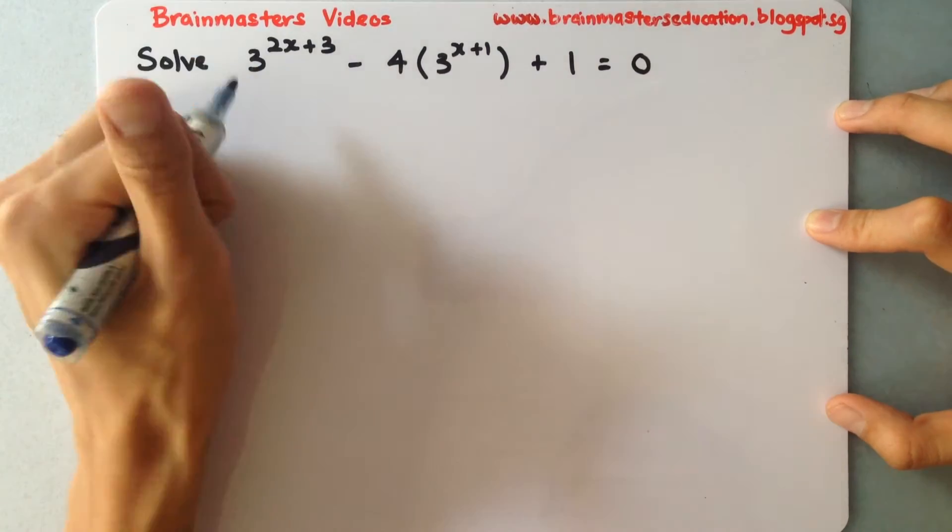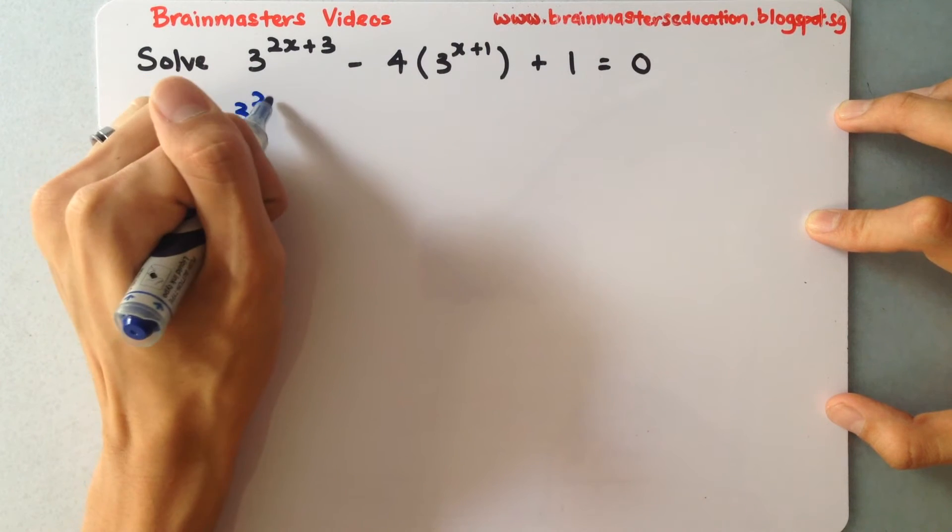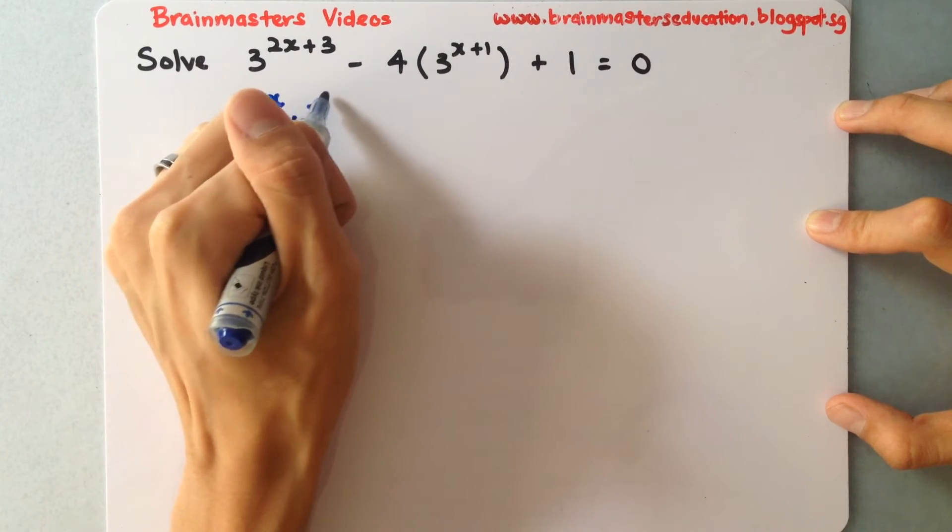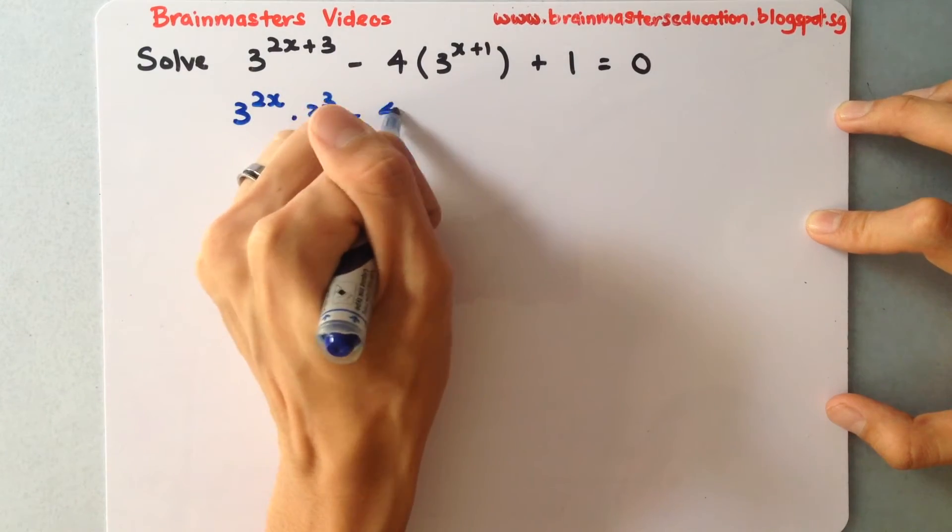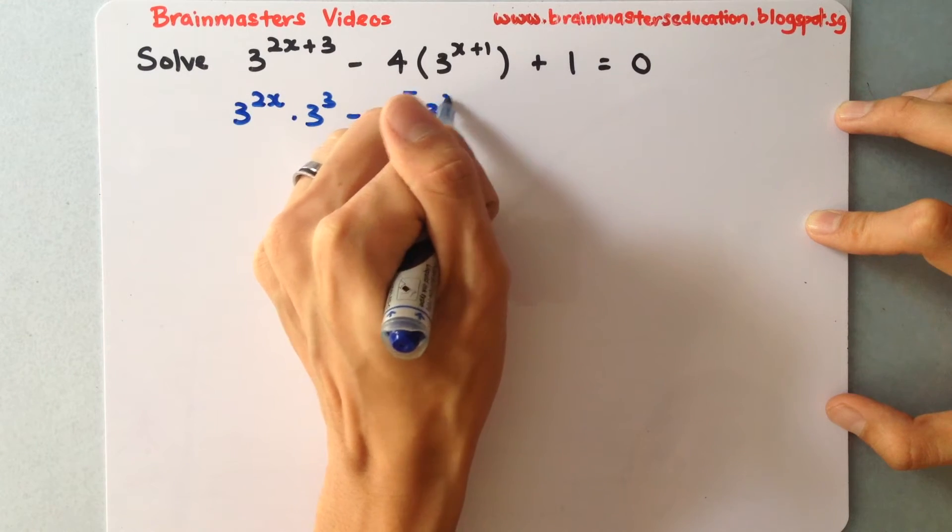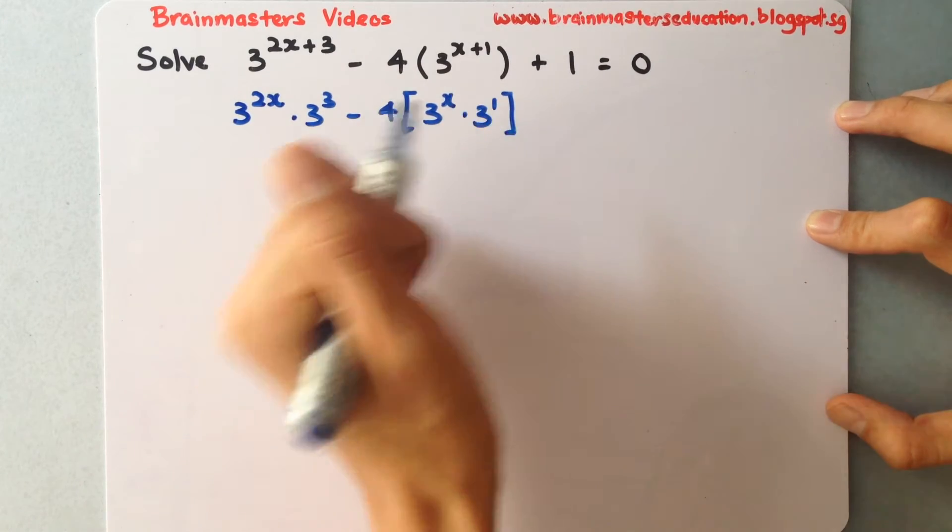I will separate this using indices rules. This becomes 3 to the power of 2x multiplied by 3 to the power of 3, minus 4 times 3 to the power of x multiplied by 3 to the power of 1.